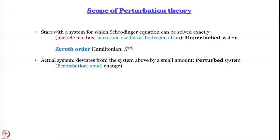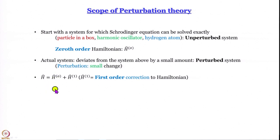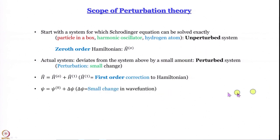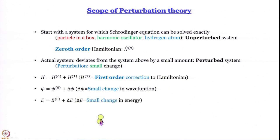Let me emphasize: perturbation is a small, small change — very, very important. We write the Hamiltonian of the perturbed system as Ĥ⁽⁰⁾ + Ĥ⁽¹⁾, where Ĥ⁽¹⁾ is the first-order correction to the Hamiltonian. The wave function ψ is written as ψ⁽⁰⁾ + δψ, where δψ is a small change in the wave function, and the energy E is E⁽⁰⁾ + δE, where δE is a small change in energy.